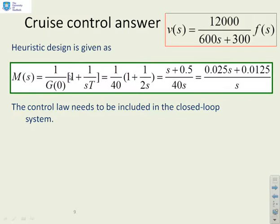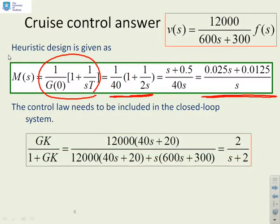So first, let's put in our heuristic design. We've said heuristic design is given by 1 over G of 0 times 1 plus 1 over ST. And for the transfer function we've got here, it comes out like this. Or in the form that we want, you see KP is 0.025 and KI is 0.0125. If we put that into the closed loop, you'll end up with a closed loop transfer function, something like 2 over S plus 2, which is a pretty fast response, in fact. So let's go to MATLAB and explore this.